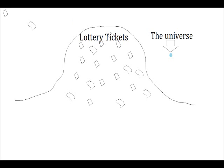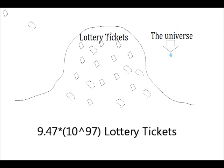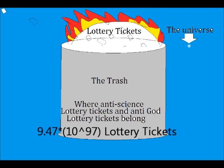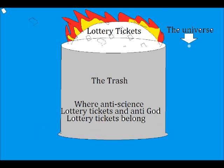If we have one new lottery ticket for every atom in the entire universe every second for the supposed 15 billion years since the Big Bang, then we have 9.47 times 10 to the 97th lottery tickets. Compare this with the 1 out of 20 to the 1,000th power odds of getting just one protein.